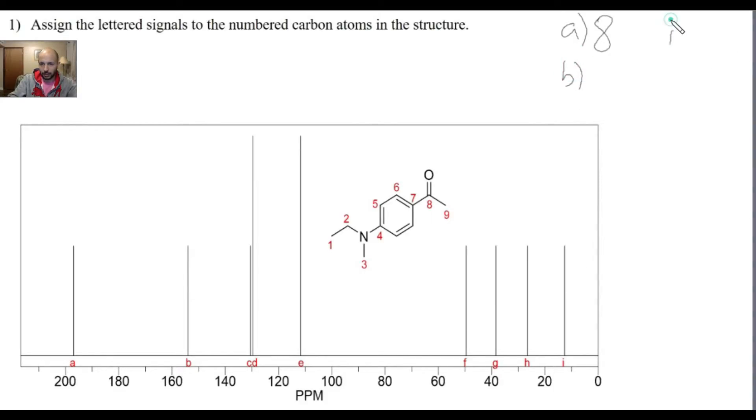So I is the most shielded carbon, and usually the rule is the more protons are on the carbon, the more shielded it is. Let's look at all the CH3s that we have in the structure. We have one CH3 here, one CH3 here, and one CH3 here, which is carbons 1, 3, and 9.